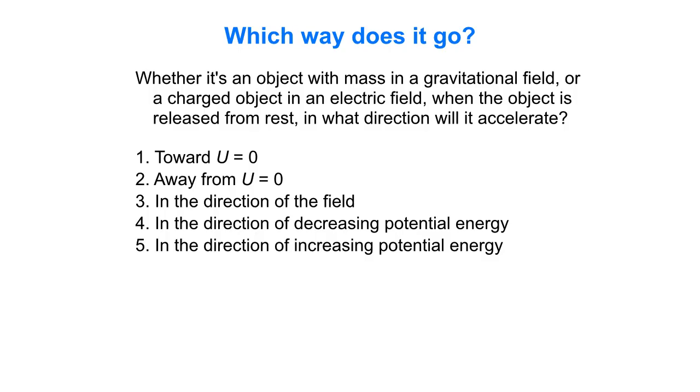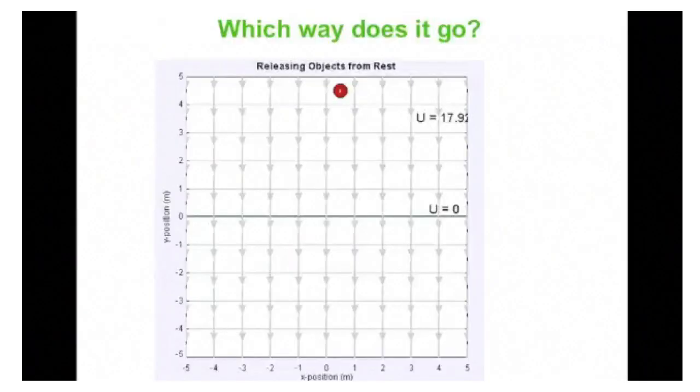So think about which way you want to choose there. And then we'll just investigate some things. So this could be a positive charge in a uniform downward-directed electric field, or just a ball in a uniform gravitational field like the one here at the surface of the Earth.